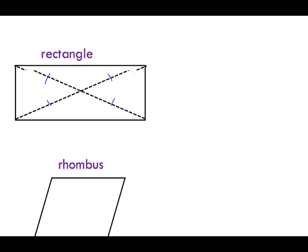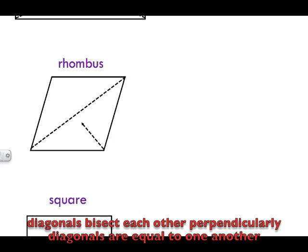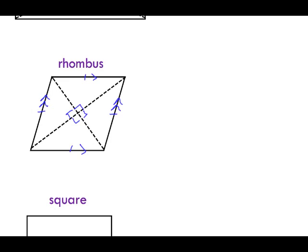In a rhombus, all the sides are equal to one another — this, this, this, and this are all equal. This side is perpendicular to this side. Now in a rhombus, the diagonals will bisect one another, and they will form 90 degree angles throughout. So the property of a rhombus is that the diagonals bisect each other at a 90 degree angle, making them perpendicular to one another.